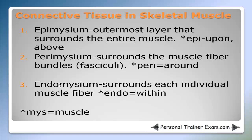To help remember these terms, break them down. MYS means muscle. Endo means within, peri means around, and epi means upon or above. To distinguish epimysium from perimysium, associate the E in epimysium with 'entire' — the epimysium is the outermost layer surrounding the entire muscle, while perimysium surrounds the muscle fiber bundles.